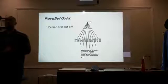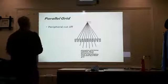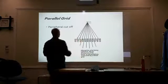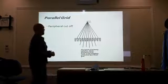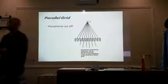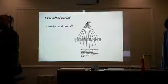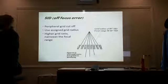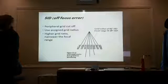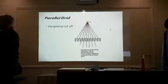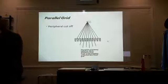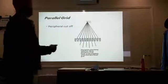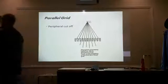And then we have the parallel grid. Non-focus grid, the strips are upright. You're going to have peripheral grid cut off if you don't match your grid radius. Remember your grid radius? Grid radius is right here, your suggested SID. So with this parallel grid, you should match the grid radius. If they say 40, try to stay as close to 40 as possible.